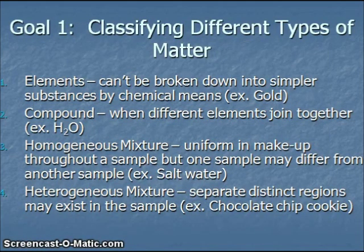Matter is defined as anything which has mass and takes up space. In chemistry, we place matter into one of two categories, pure substances or mixtures. For pure substances, we have elements, for example, gold or carbon. These are things which cannot be broken down into simpler substances by chemical means.